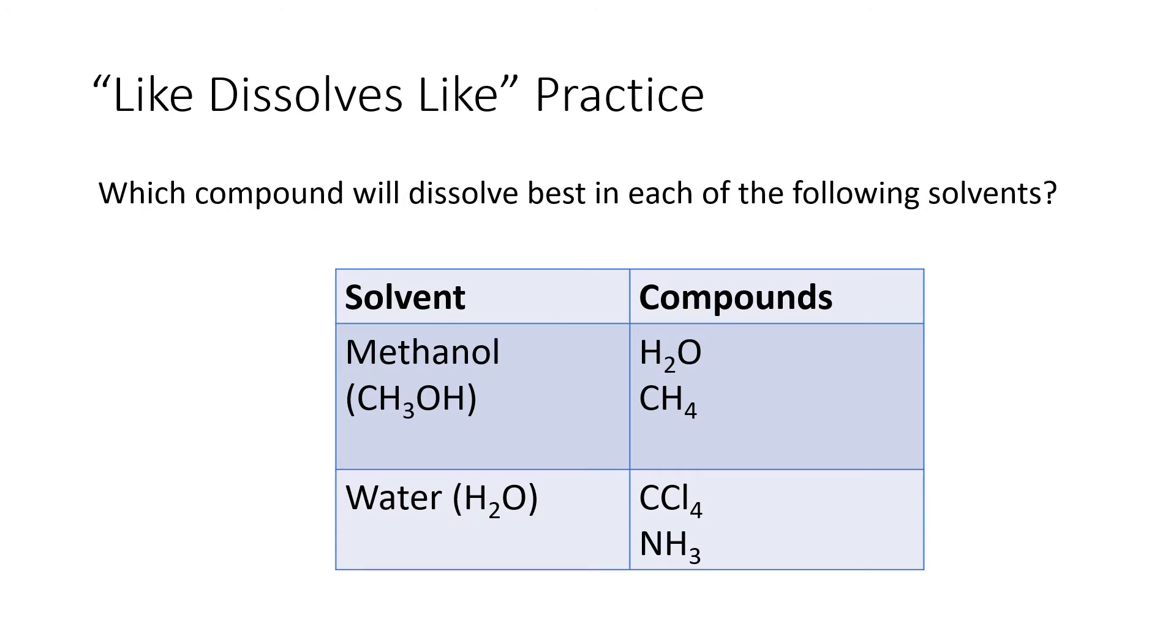So what does a problem on a homework, a quiz, or a test look like on this topic? We'll try to predict which one of the compounds in the second column is most likely to dissolve in the solvent that's listed in the first column. We need to look at the intermolecular forces involved in all of these. In our first solvent, methanol, well, methanol has this OH group in it, which means it's going to be able to do hydrogen bonding.